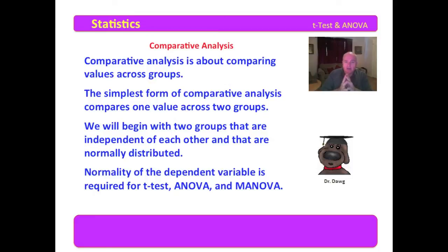Normality of the dependent variable is required for t-test, ANOVA, and MANOVA. So our comparison of two groups and one variable across two groups is called a t-test, which is listed right here.